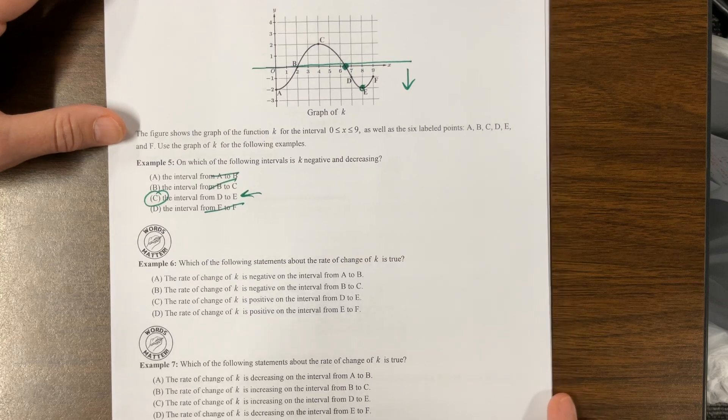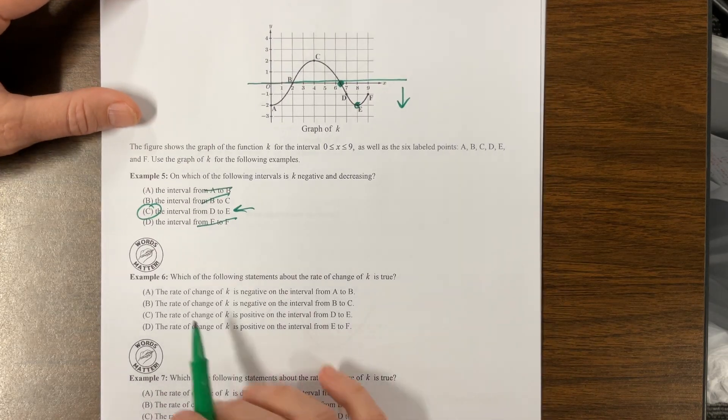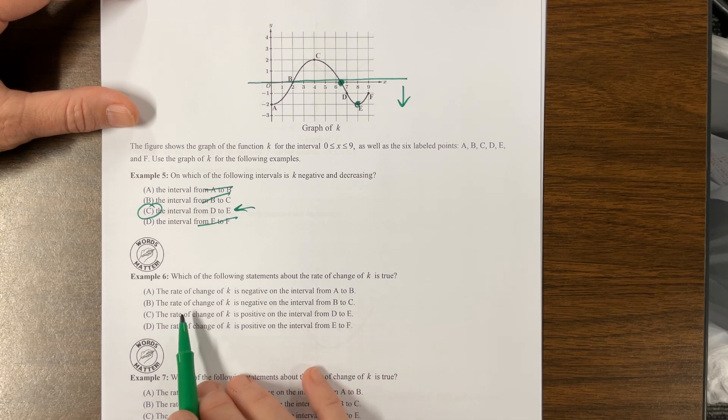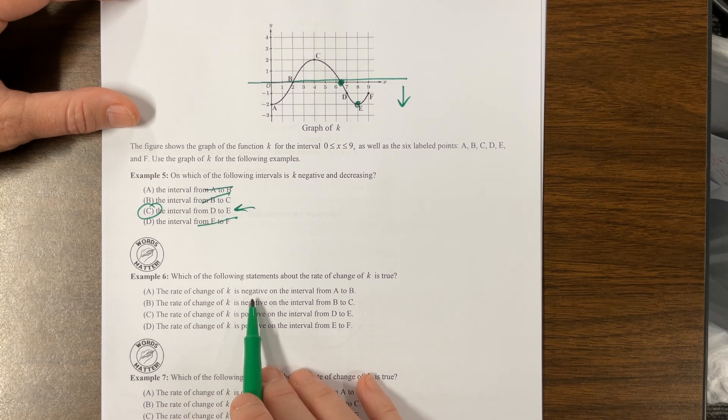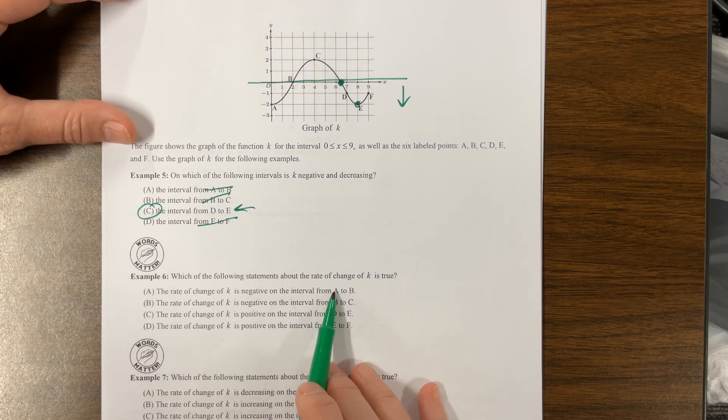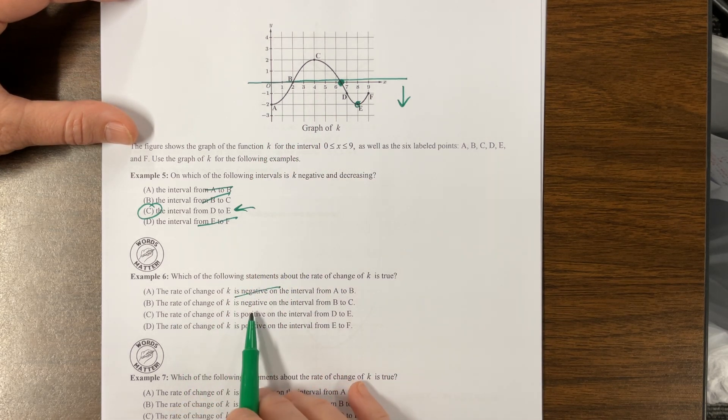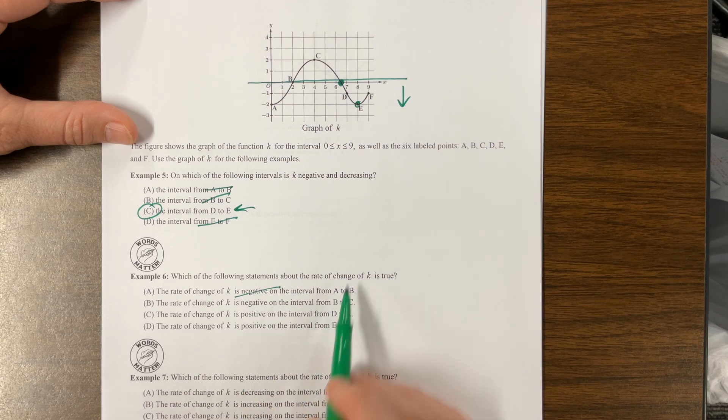Which of the following statements about the rate of change of K is true? The rate of K, rate of change of K is negative. That means the graph will be decreasing from A to B. No, it's not decreasing.